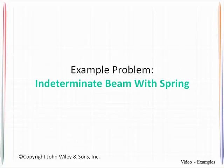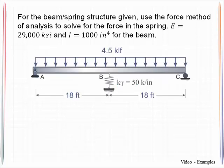In this example, you will learn how to deal with a composite structure which includes springs. This will all be done within the force-based approach for indeterminate structures. We're going to look at a particular beam that has been supported in the middle with a translational spring with stiffness of 50 kips per inch. The beam has a certain moment of inertia, modulus of elasticity, and a given load.